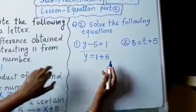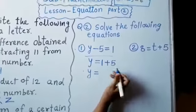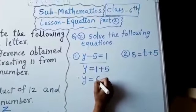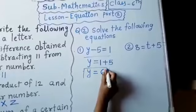This minus becomes plus 5. Then, y is equal to 5 plus 1. It means 6. This is first method.